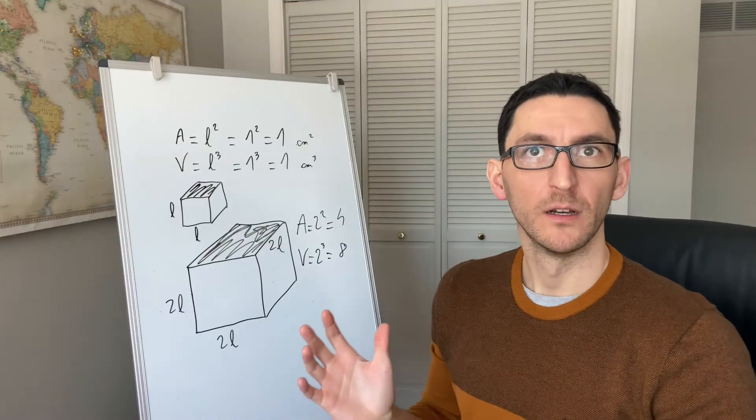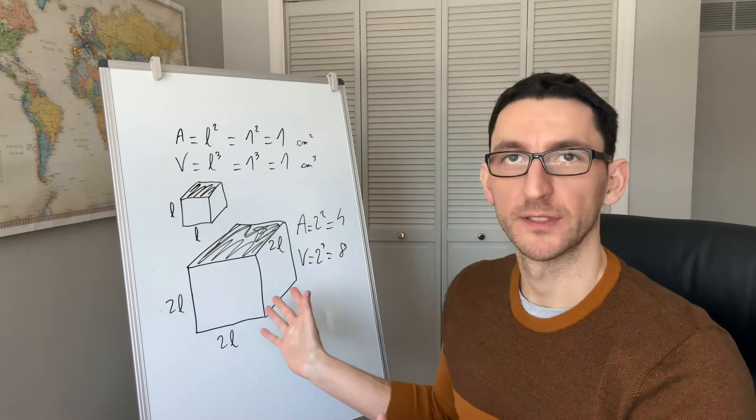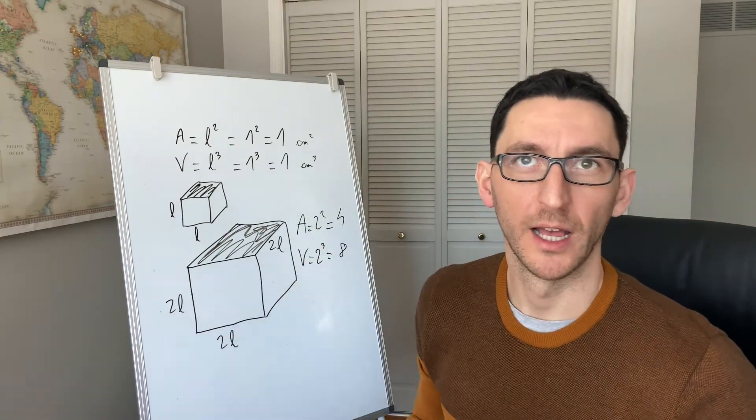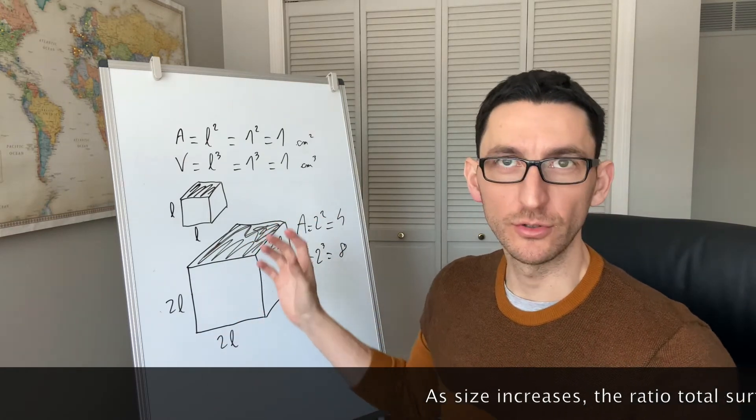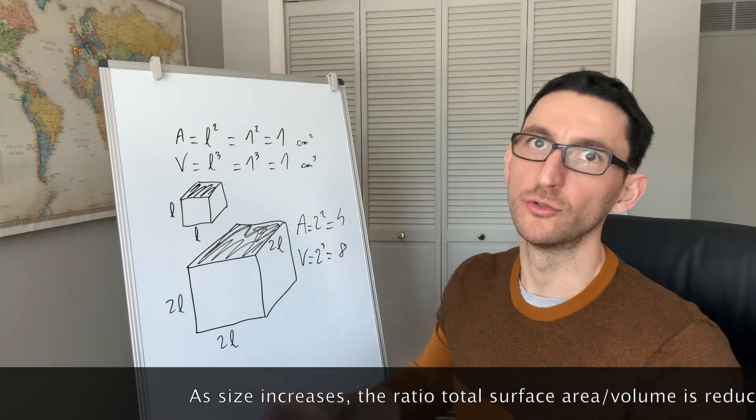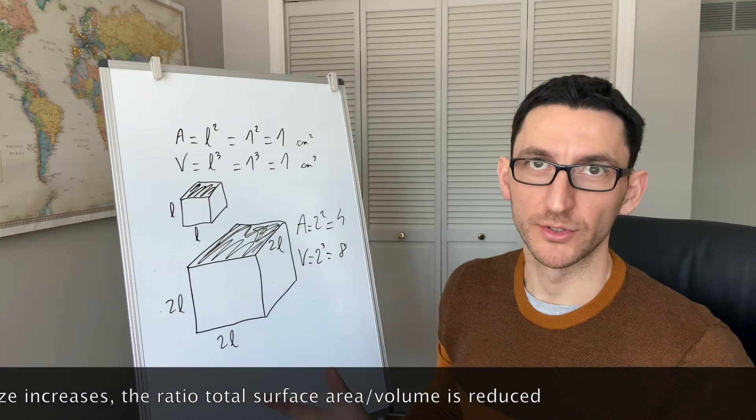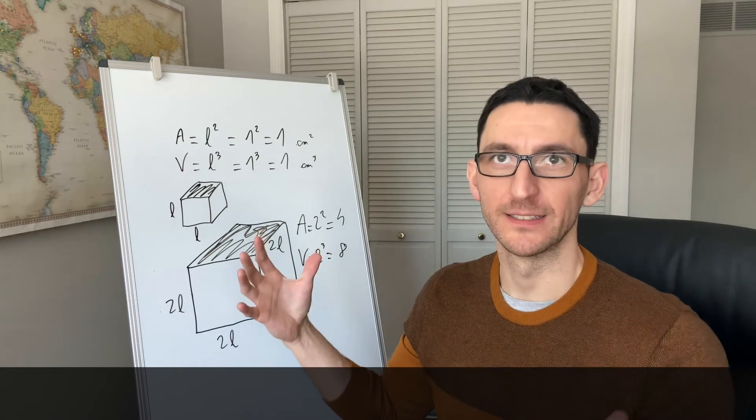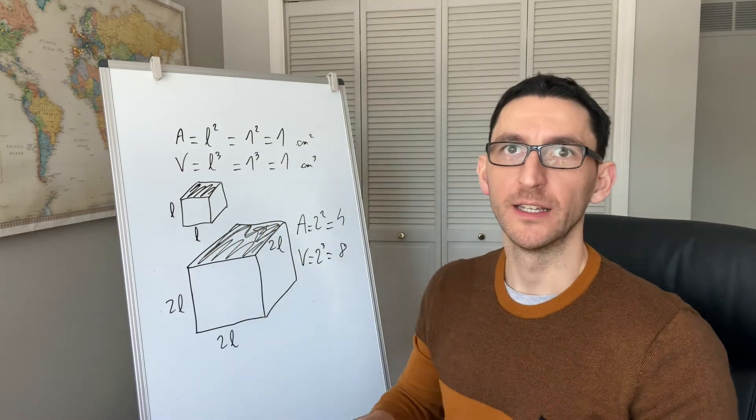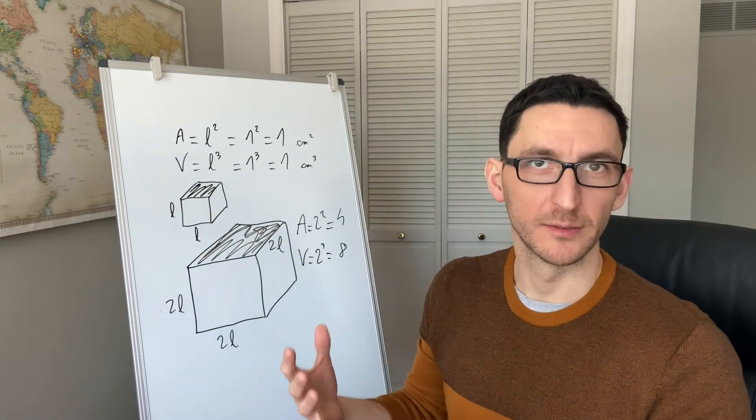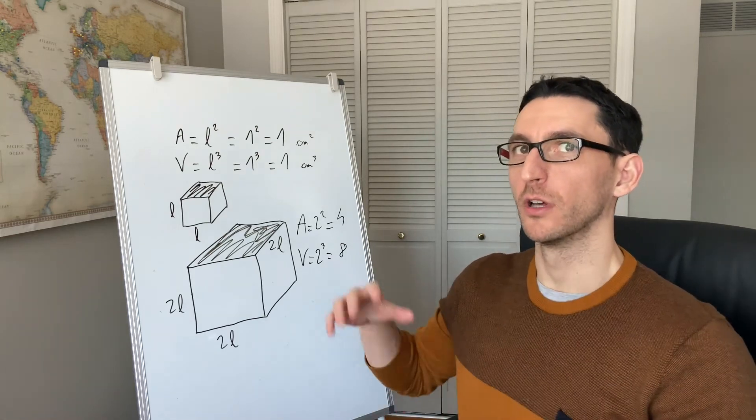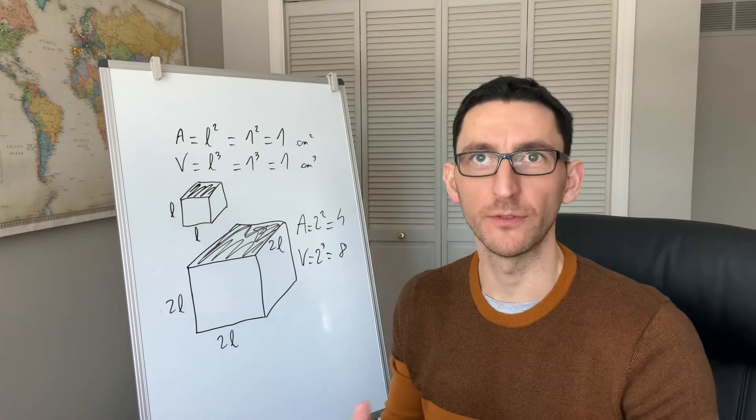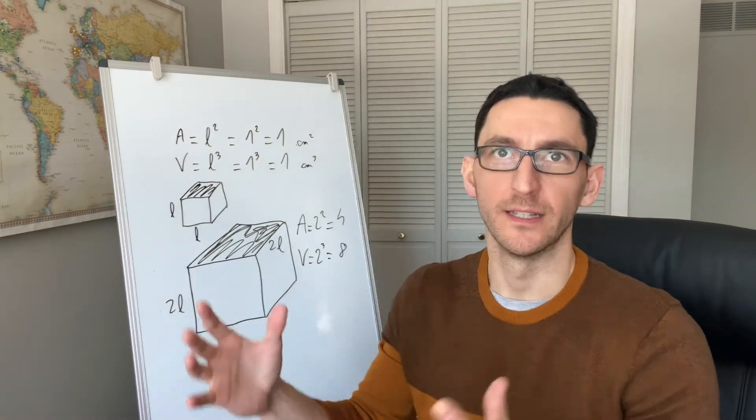This also explains why the total surface area is important for heat regulation. As the object increases in size, the total surface area compared to the volume is reduced. In other words, as the organism is growing, its mass and volume are growing and it's producing more heat, especially for mammals. But the proportion of skin that is able to help regulate temperature is less and less and less.